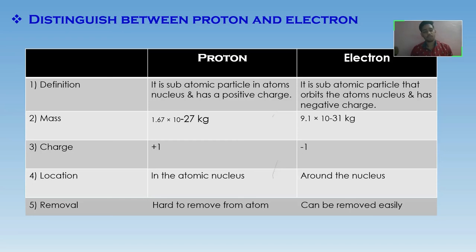The mass of proton is 1.67 into 10 raised to minus 27 kg, whereas mass of electron is 9.1 into 10 raised to minus 31 kg.